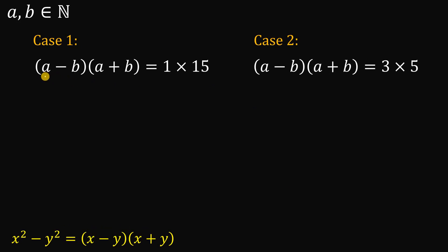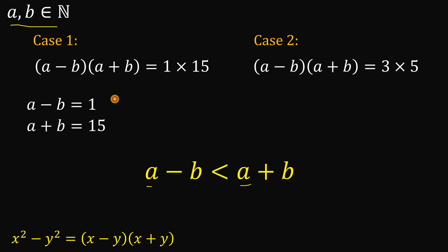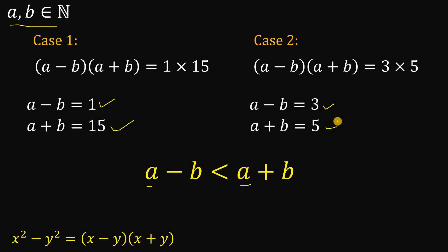Now, which factor corresponds to a minus b and which to a plus b? Take note: since a and b are both natural numbers, a minus b must be less than a plus b — adding b increases the value while subtracting decreases it. Therefore, a minus b takes the smaller factor and a plus b takes the larger. So in Case 1, a minus b equals 1 and a plus b equals 15. In Case 2, a minus b equals 3 and a plus b equals 5.